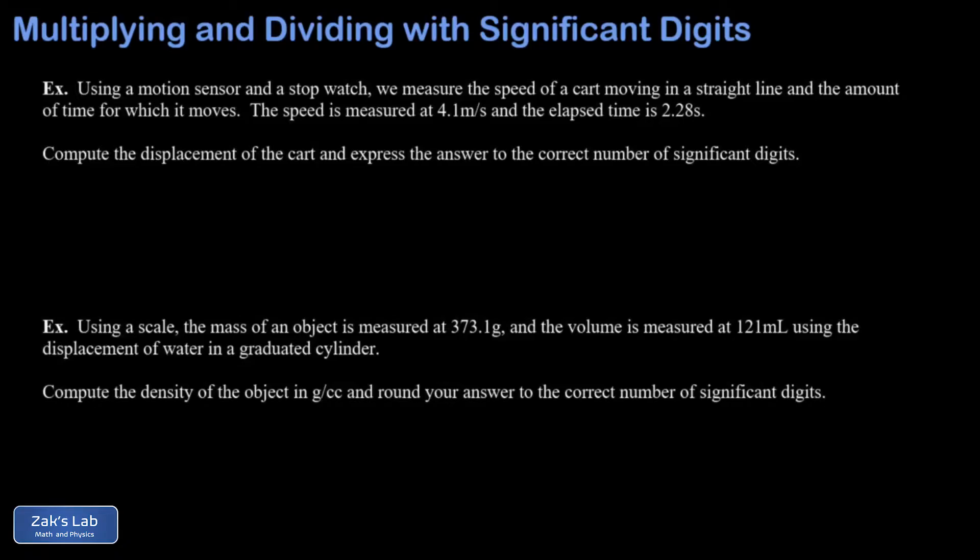So in the first one we're told that we've used a motion sensor to measure speed and a stopwatch to measure time as we watch a cart move along in a straight line with a constant speed. That speed measures to 4.1 meters per second and the time measures to the hundredths place as 2.28 seconds.